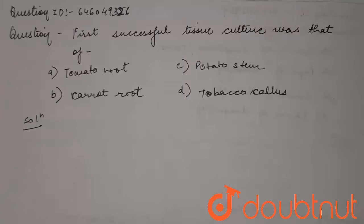First successful tissue culture was that of: a) tomato root, b) carrot root, c) potato stem, and d) tobacco callus.